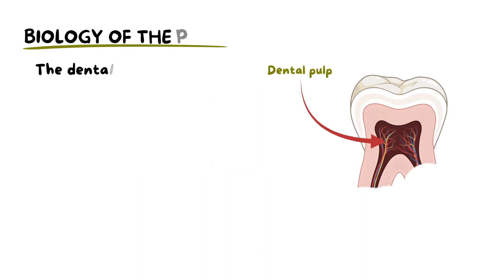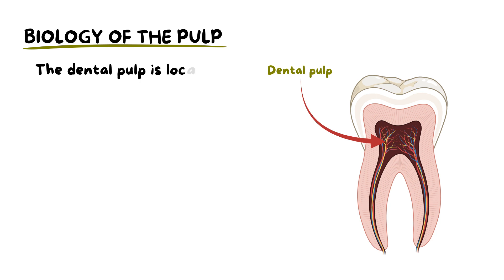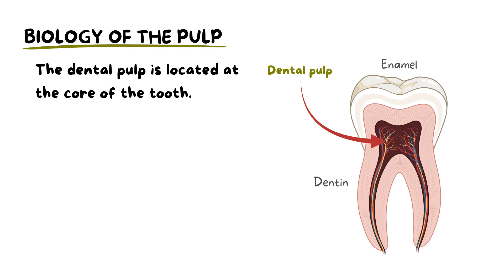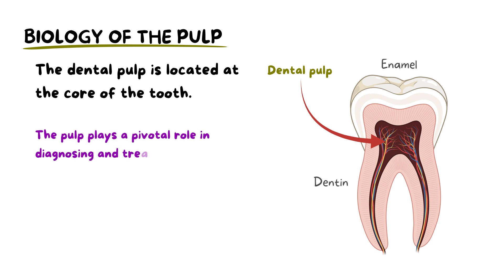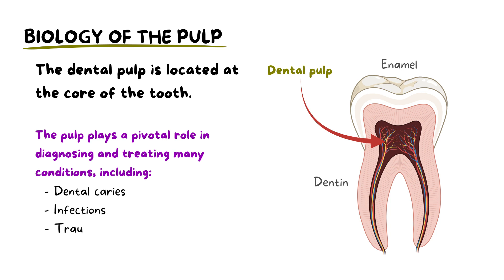The dental pulp is a vital component of the tooth located at its core, beneath the hard outer layers of enamel and dentine. Understanding the biology of the dental pulp is crucial in dentistry, as it plays a pivotal role in diagnosing and treating conditions such as dental caries, infections and trauma that can affect the health and vitality of this essential dental tissue.